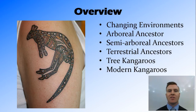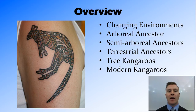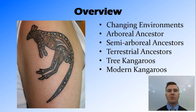In this video we've looked at the changing environment in Australia and how kangaroos or macropods have evolved to deal with and alongside that change. We talked about their arboreal ancestor being similar to a possum, going to the semi-arboreal — both living in trees and on the ground — with an ancestor similar to the modern musky rat kangaroo. We talked about the terrestrial ancestors and in particular the megafauna, and at this time gaining that very important foregut digestion. Then tree kangaroos — those kangaroos that were terrestrial and moved back into the trees — and finally our modern kangaroos which now dominate the landscape.